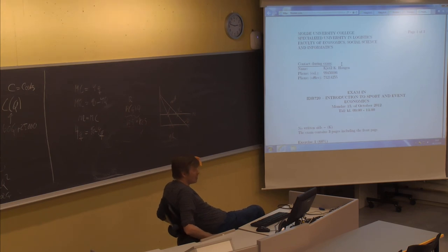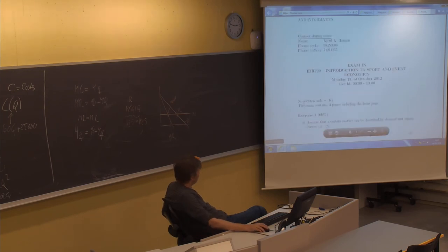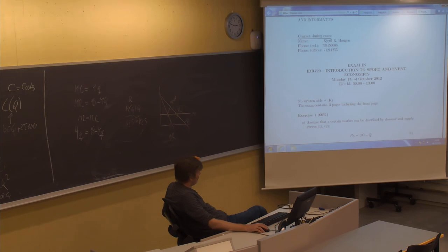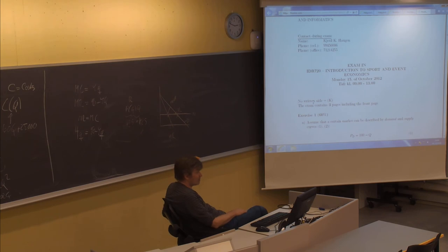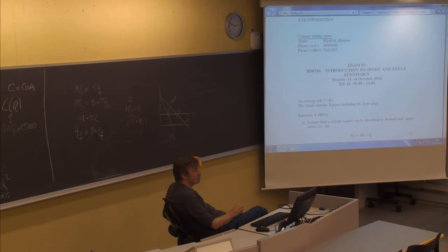The exam is four hours long, starting at nine and ending at one. There are no written aids except a calculator — you should not keep anything in it that violates the rules. You don't need a fancy calculator; as long as it can add, divide, subtract, and take a square root, that is enough. That gives you an indication of the level of difficulty.